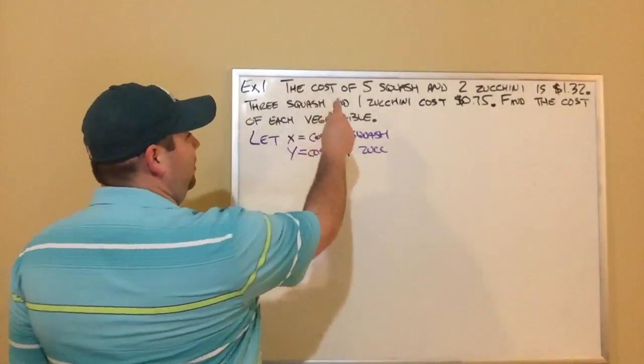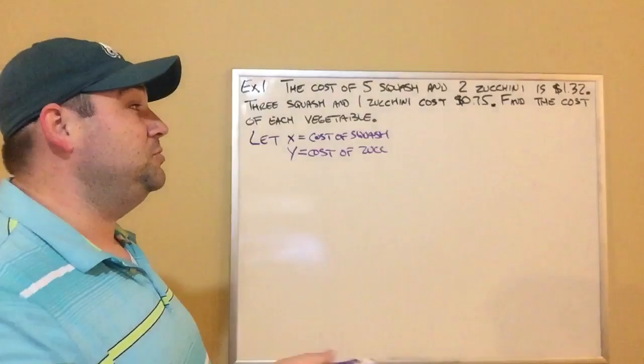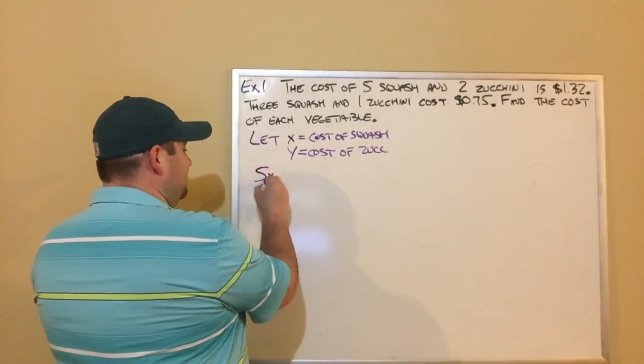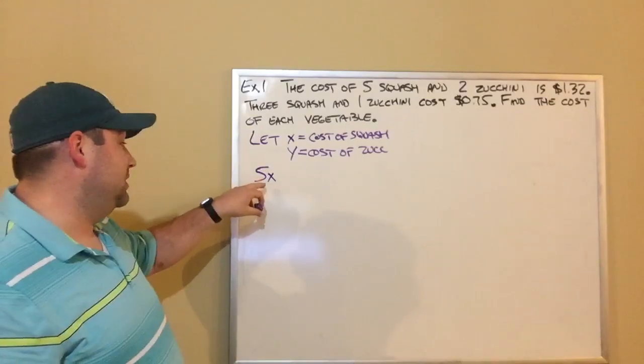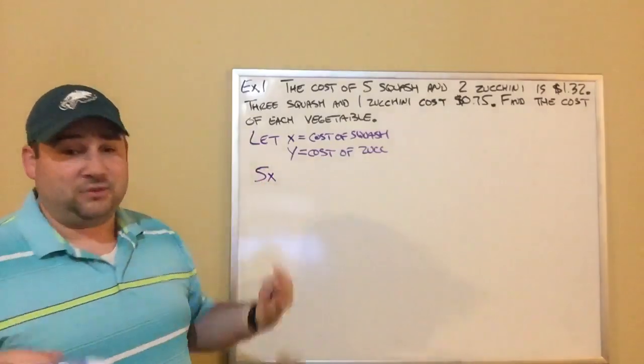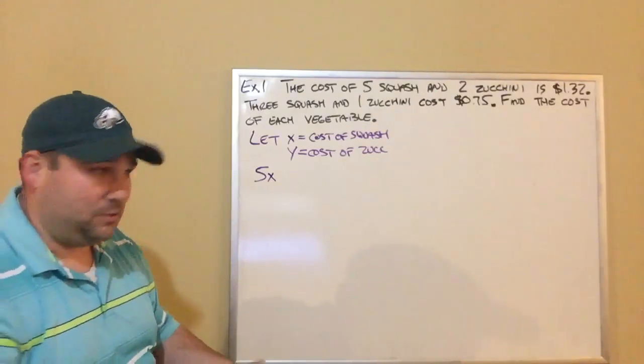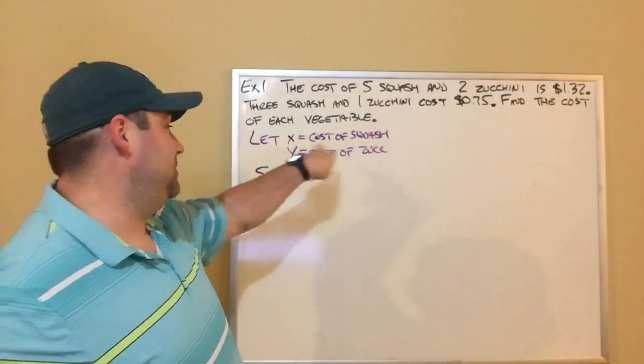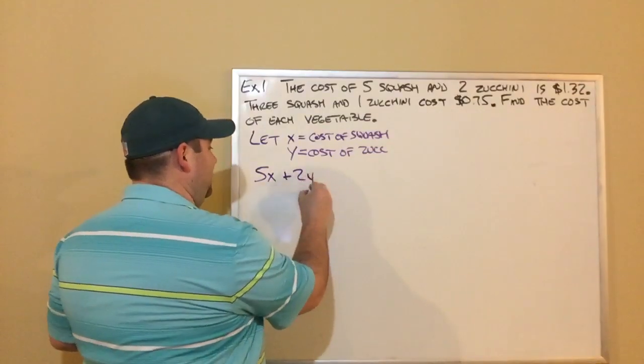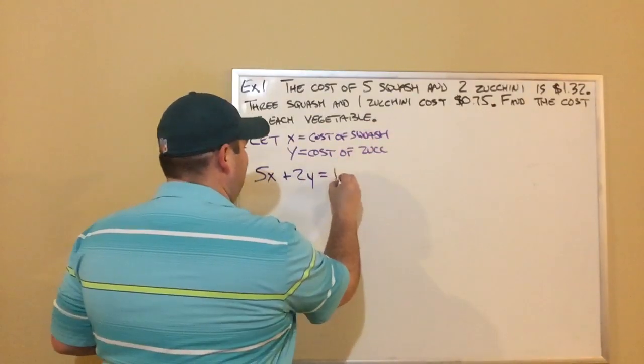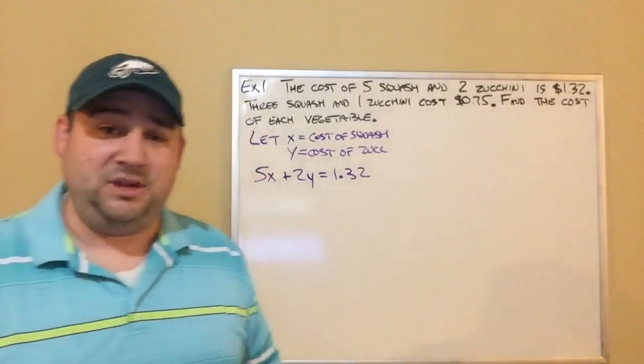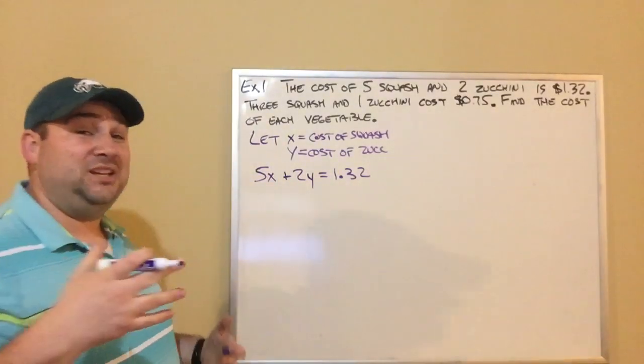This first sentence, we were told the cost of five squash and two zucchini is $1.32. So I know 5X, which would be five times the cost of a squash, plus 2Y, the cost of the zucchini, that's got to equal $1.32. So I've successfully written one equation, but we know we need a system. We need two equations.